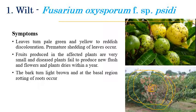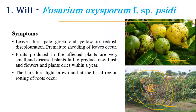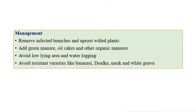Black color spots can also be seen on fruits. The affected plants are very small compared to healthy plants, and the plant will eventually dry and die. Coming to management: remove infected branches and uproot wilted plants. Apply green manure, soil cakes, and organic amendments. Avoid low-lying or waterlogged areas for cultivation of gourd.